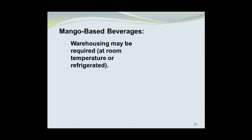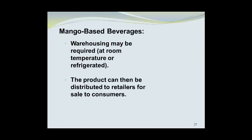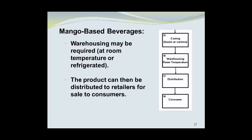The containers can then be cooled and placed in cartons. Warehousing may be required at room temperature or refrigeration temperatures, and the product can then be distributed to retailers for sale to consumers. On the flow diagram, after casing the product goes to warehousing — shown at room temperature but refrigeration is also possible. The product is then distributed, and box number 18, labeled 'consumer,' gives a final wrap-up to the flow chart.